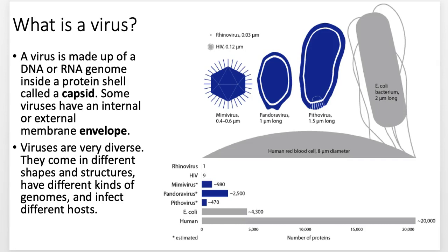Viruses are super diverse. I like this picture because it shows some of the sizes — rhinoviruses, named after your nose, are a typical common cold kind of virus; HIV is pretty small; and then here are a couple of the huge giant ones. Pithoviruses can get almost as big as an E. coli, which is crazy. They're not very successful viruses probably because they're just so big, but they must be at least mildly successful because they're still around.